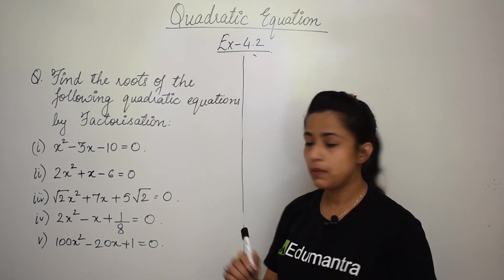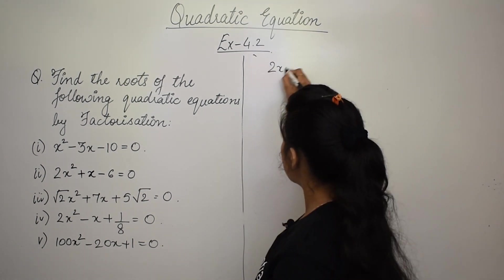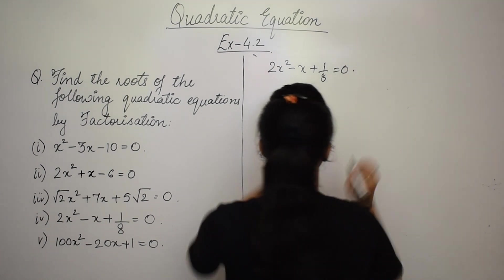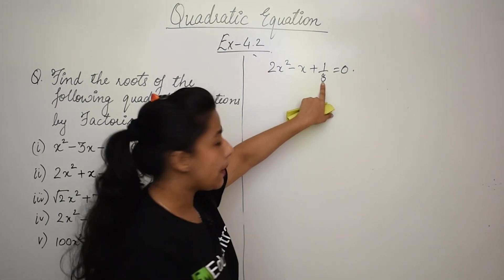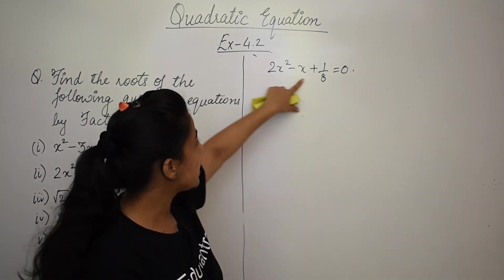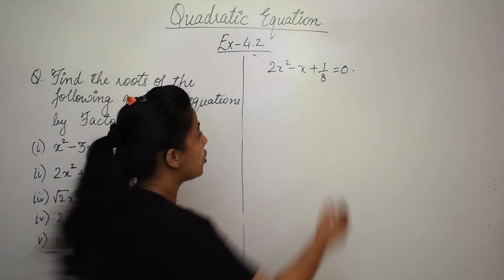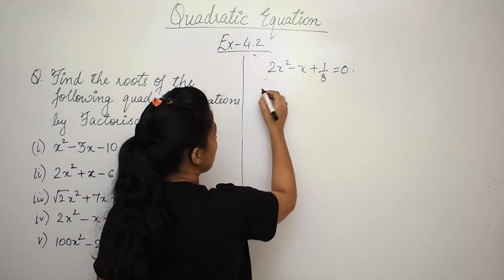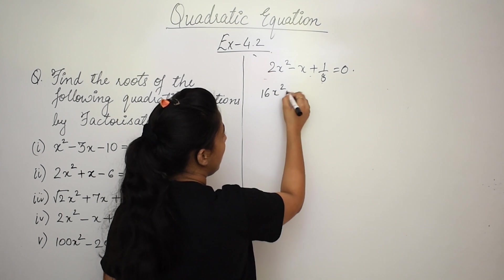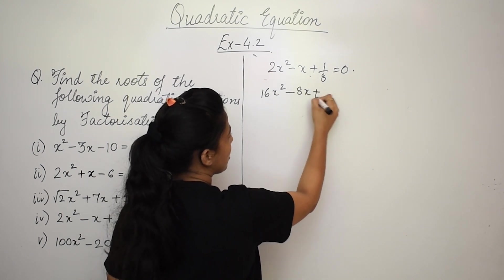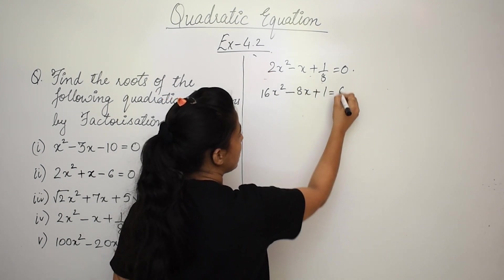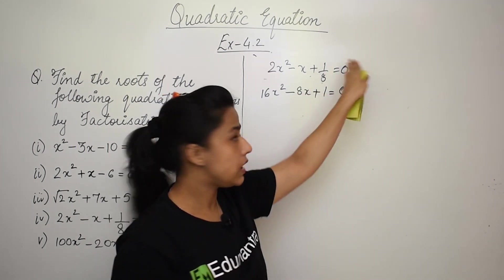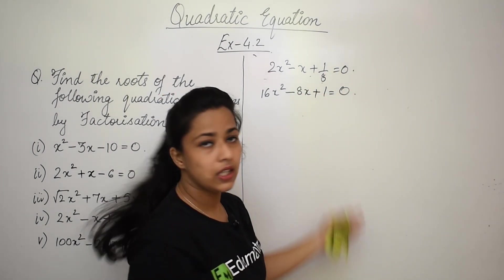The fourth equation is 2x² - x + 1/8 = 0. Since we have a fraction, multiply everything by 8 to clear the denominator. This gives 16x² - 8x + 1 = 0. Now A×C = 16 × 1 = 16. We need factors of 16 that add to -8.